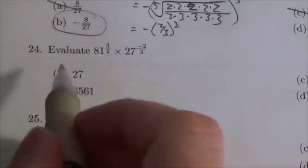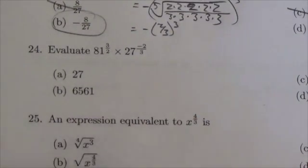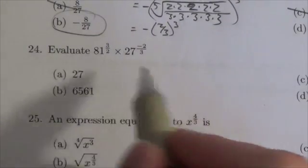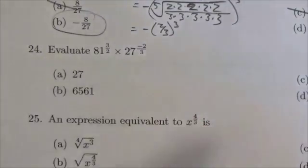Hi everybody, this is the Math 10 Exponents and Radicals Review and this is multiple choice question 24. Evaluate 81 to the three halves times 27 to the negative two-thirds.